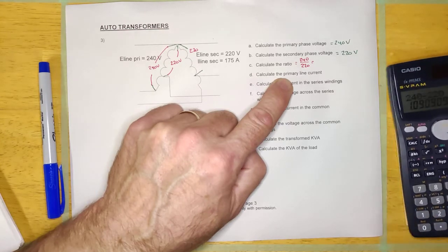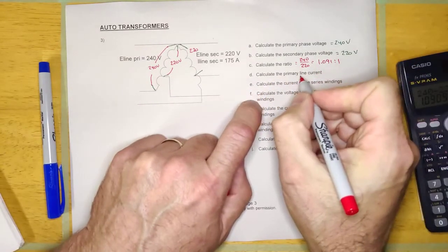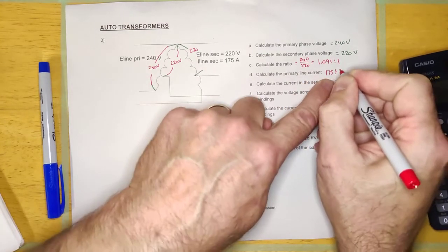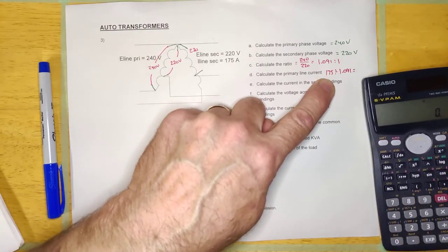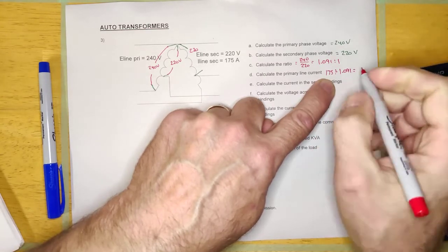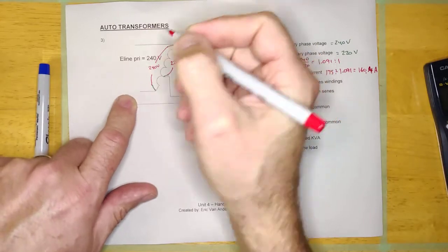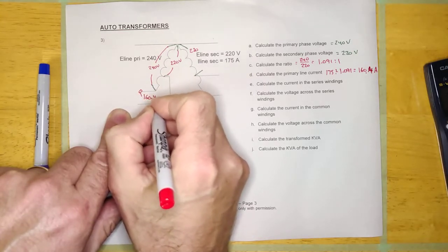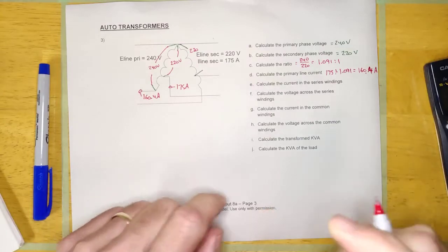Calculate the primary line current. We're going to do it exactly the way we've been always doing it. It's going to be the secondary current, 175 amps, divided by the ratio. That'll work for every kind of transformer - single phase, Y, or open delta. 175 divided by 1.091 equals, looks like that current is 160.4 amps, and we're going to put that right on here so that we can figure it out later. This one right here is the 175 amps, the secondary line current. That's going to help us figure out what's going on.